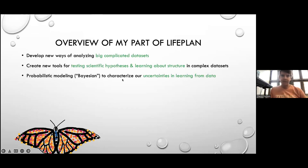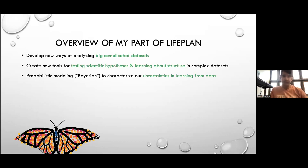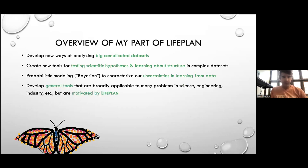The general approach we take is probabilistic modeling or Bayesian statistics. This is really useful in allowing you to model structure in ecological data and characterize uncertainties in learning from data. If you take many other approaches, you don't have that ability to characterize uncertainty and learning structure and testing hypotheses.